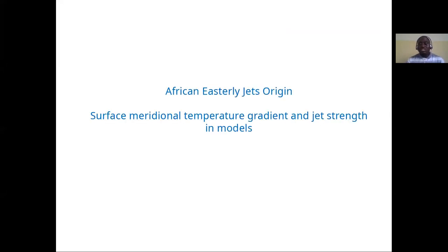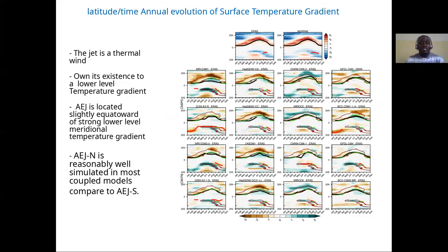As a first step to understand the improvement in location and intensity of the jet in CMIP6 models, we have assessed the surface meridional temperature gradient, which is a mechanism to which the jet owes its existence. We present a latitudinal-time annual evolution of the surface temperature gradient in models, showing the climatology of the temperature gradient in reanalysis at the top of the panel.